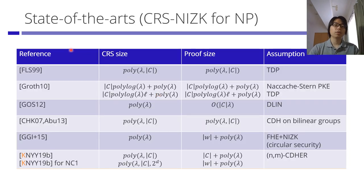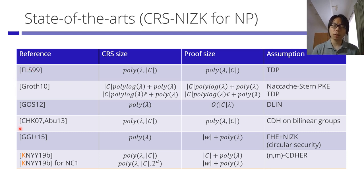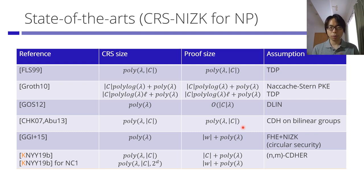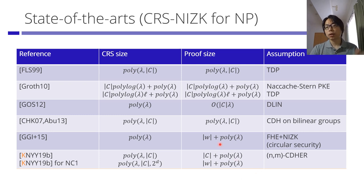This is the state of the art in this regime. There is a lot of work relating to making the proof size smaller or making the assumption more standard. The first four rows are all based on very well-known assumptions; however, the proof size has a polynomial dependency — the circuit size and security parameter have polynomial dependencies. The bottom two have very small proof sizes: either witness size plus poly-lambda or circuit size plus poly-lambda, only an additive relationship.